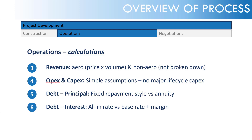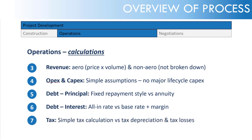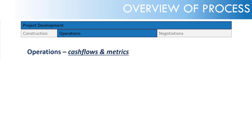Fifthly, we'll look at principal repayment of debt: fixed repayment style versus annuity. Then we'll get into interest for debt — the simplification here is we'll assume an all-in rate rather than a base rate plus a margin. Then we'll get into tax with a simple tax calculation: we're not doing tax depreciation calculations, not doing tax loss calculations, and we're assuming tax is paid on an annual basis rather than quarterly.